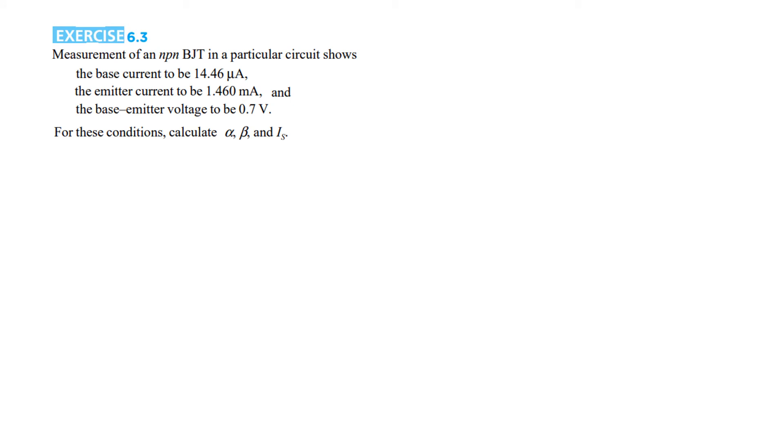The last example: Measurement of an npn BJT in a particular circuit shows the base current is 14.46 microampere, the emitter current is 1.46 milliampere, and the base-emitter voltage is 0.7 volt. For these conditions, calculate alpha, beta, and IS.